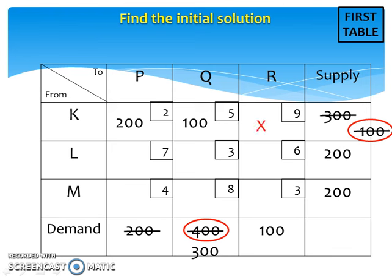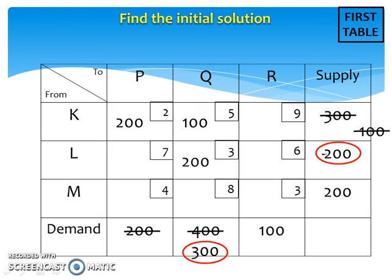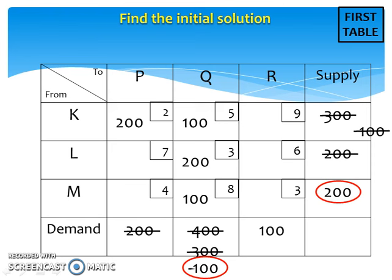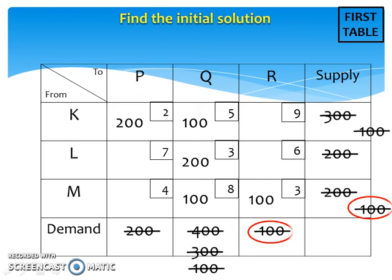Then, we need to repeat the process until we reach the last square and until all supply and demand are satisfied. After we have found the initial solution, we need to proceed to finding the optimal solution.